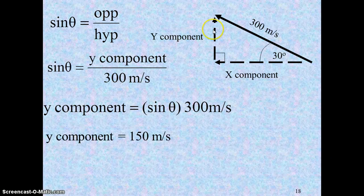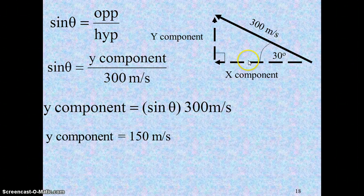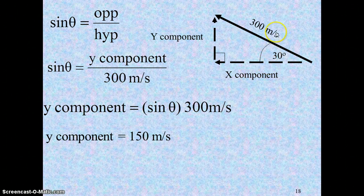We could do the same thing for the x component if we wound up using the cosine of the angle because the cosine winds up being the adjacent side divided by the velocity.